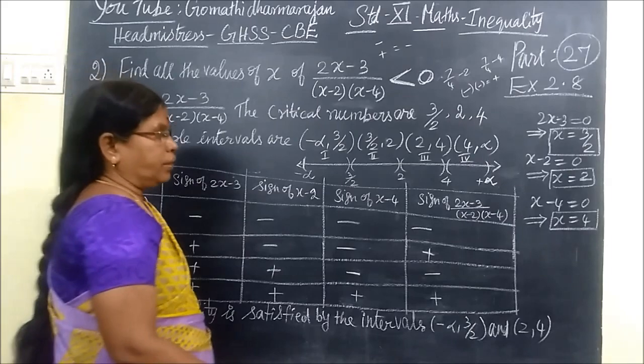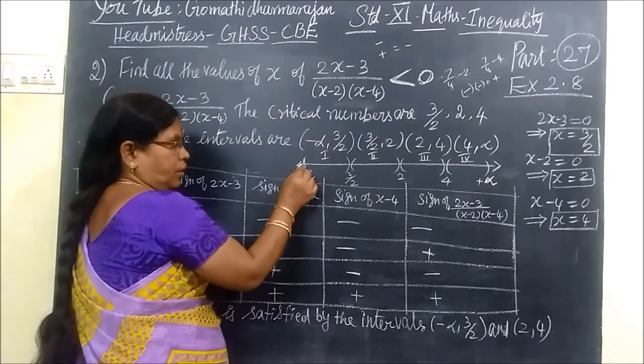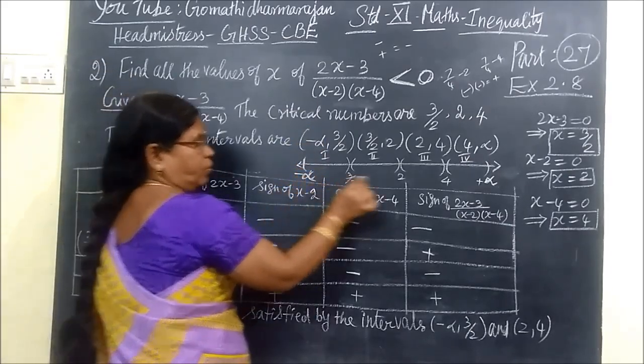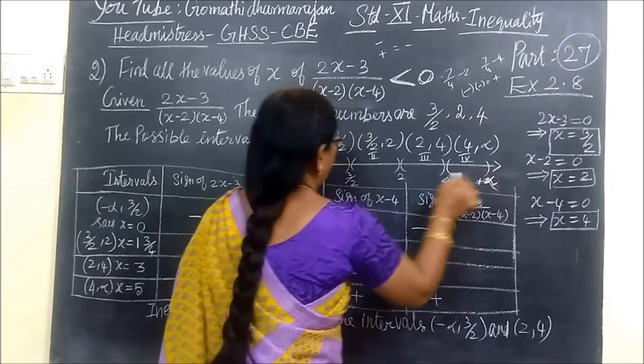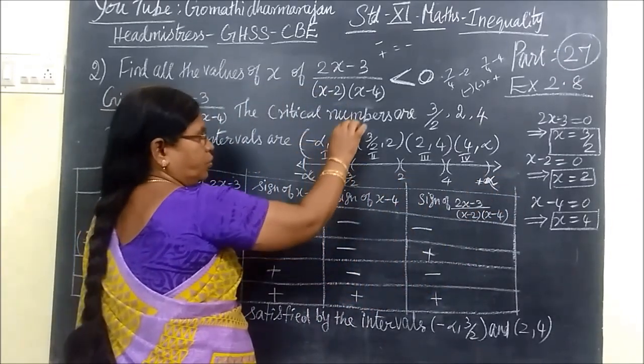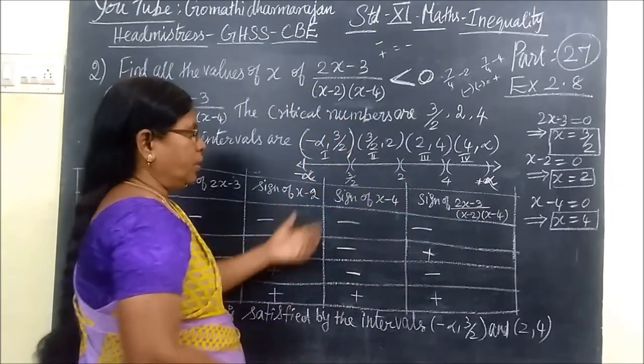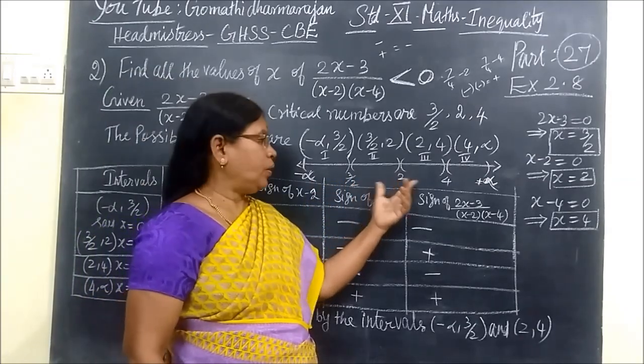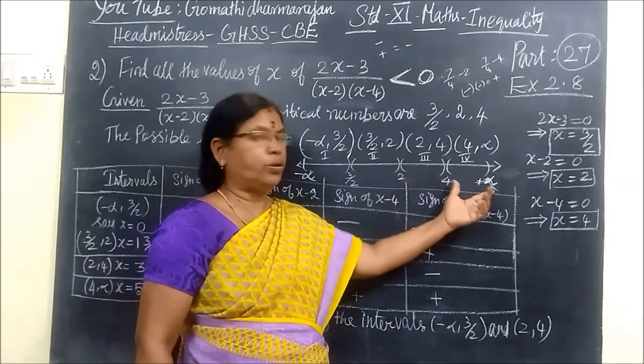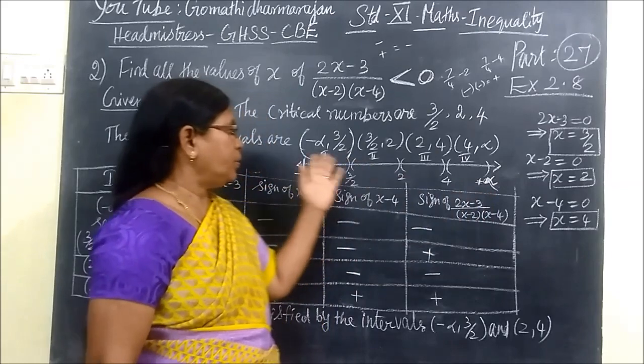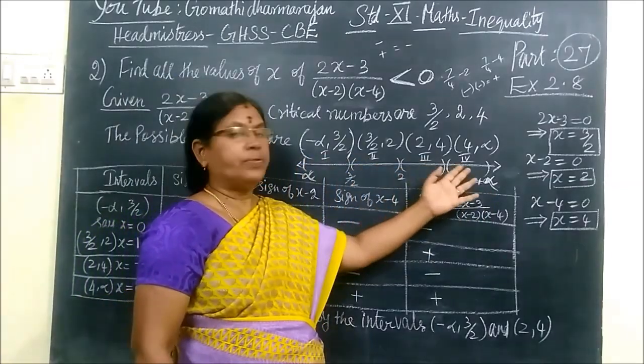With the critical numbers, we are forming the intervals. The intervals are: minus infinity to 3 by 2, then 3 by 2 to 2, then 2 to 4, then 4 to infinity. So we have four intervals in the number line.